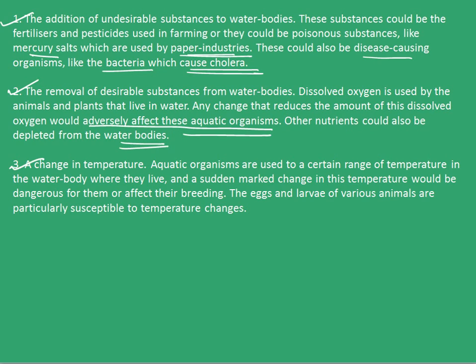The third type is a change in temperature of the water. Aquatic organisms are used to a certain range of temperature in the water body where they live, and a sudden marked change in this temperature would be dangerous for them or affect their breeding. The eggs and larvae of various animals are particularly susceptible to temperature changes. Hence, it is not desirable to change the temperature of a region in water from its natural value.